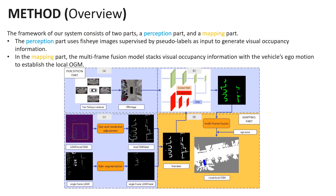The framework of our system consists of two parts: a perception part and a mapping part. The perception part uses fisheye images supervised by pseudo-labels as input to generate visual occupancy information. In the mapping part, the multi-frame fusion model stacks visual occupancy information with the vehicle's ego motion to establish the local OGM.